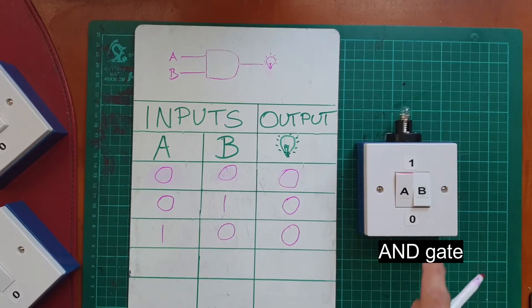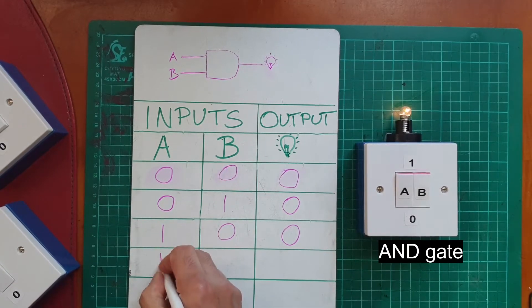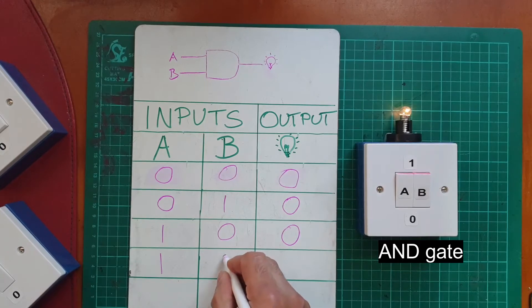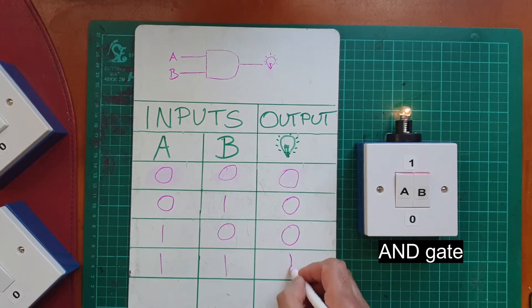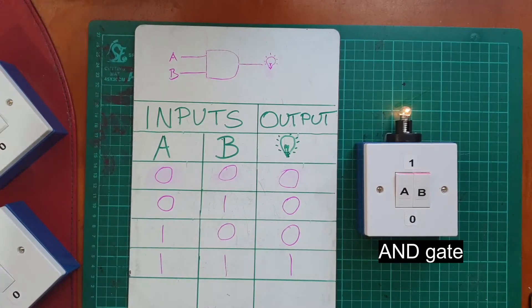So now the only other permutation is to switch A and B on. A is on, B is on, and the light bulb is on, so we insert a one here. So that's the truth table for an AND gate.